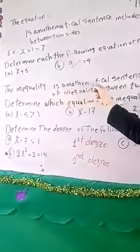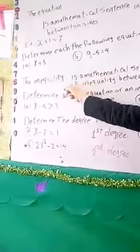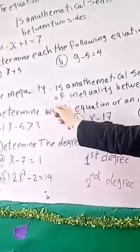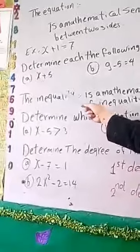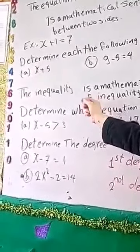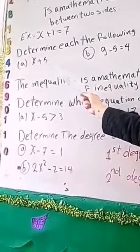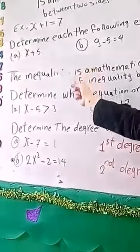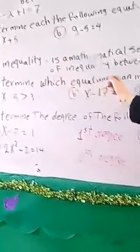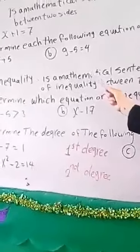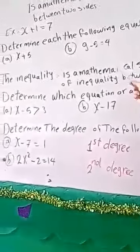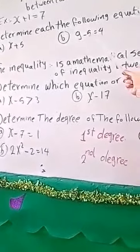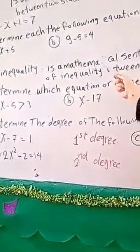Determine each of the following as an equation or not. The first one: x plus 5 — is it an equation or not? It is not an equation, because there is no equals sign here. The second one: 9 minus 5 equals 4 — here we see the equals sign, so this is an equation.